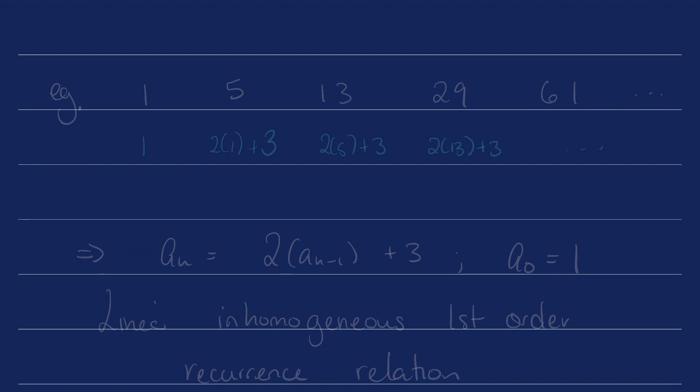Alright, now let's put some of these terms together. So for example, if I have 1, 5, 13, 29, 61, etc. One might be able to look at this and start to guess a formula. So this is going to be 1, this is going to be 2(1) + 3, 13 is 2(5) + 3, 29 is 2(13) + 3, etc. If the pattern continues, this will give us a_n = 2a_(n-1) + 3 with initial condition a_0 = 1. This is going to be an example of a linear inhomogeneous first order recurrence relation.